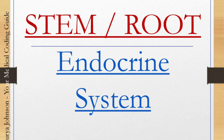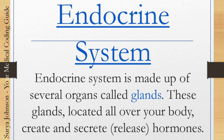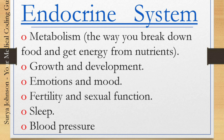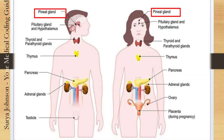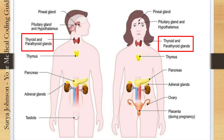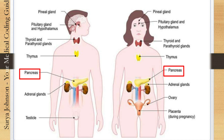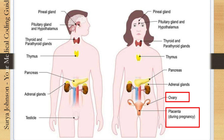We will now move on to the endocrine system. The endocrine system is made up of several organs called glands, located all over your body, which create and secrete hormones. The endocrine system helps in metabolism — the way you break down food and get energy from nutrients. It aids in growth and development, plays a major role in emotions and mood, and helps with fertility and sexual function. It also regulates sleep and blood pressure. Parts of the endocrine system include the pineal gland, pituitary gland, hypothalamus, thyroid and parathyroid glands, thymus, pancreas, adrenal glands, testicles (male), and ovaries and placenta (female).